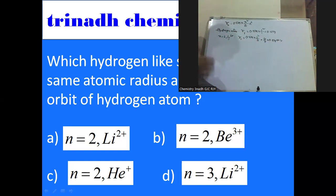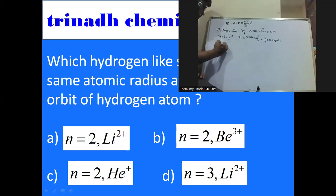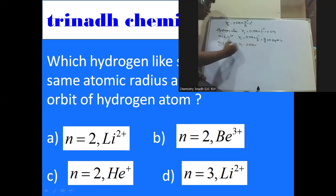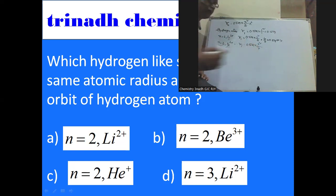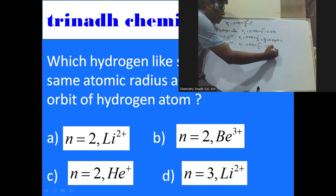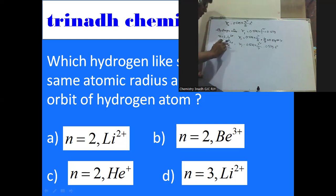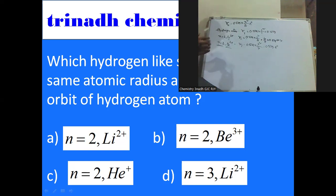The next option is n = 2, Be²⁺. For Be²⁺: r = 0.529 × (2²/4), since beryllium's atomic number is 4. This gives 0.529 × 4/4 = 0.529 Å. So n = 2, Be²⁺ has the same atomic radius as that of the first Bohr orbit of the hydrogen atom.